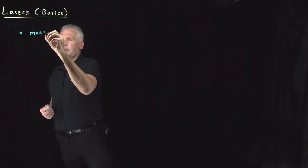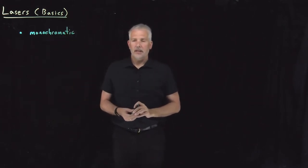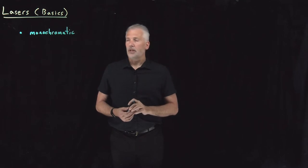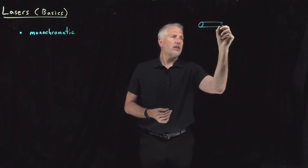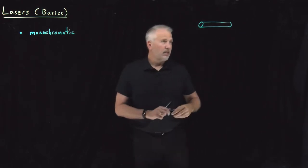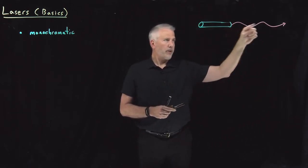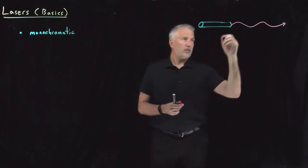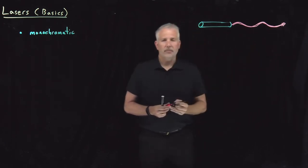The first characteristic of a laser is that it's a monochromatic light source — monochromatic just meaning single color. The light that comes out of a laser is of a single frequency or single wavelength, or at least very tightly bunched around a single wavelength. In a red or pink laser pointer, all the photons coming out at the same time are the same frequency as each other.